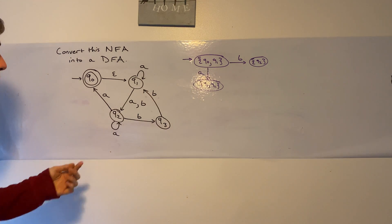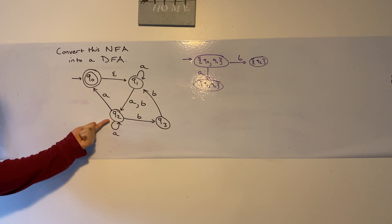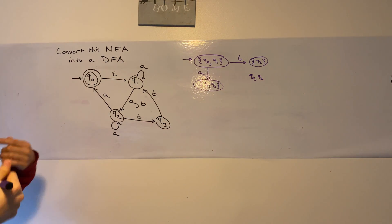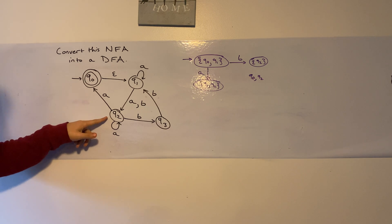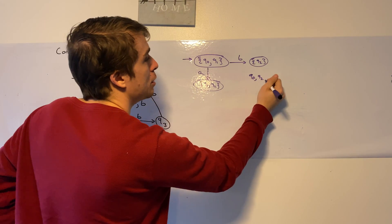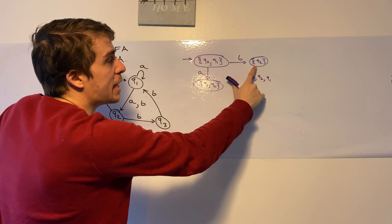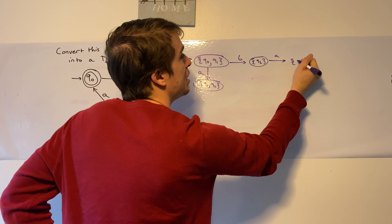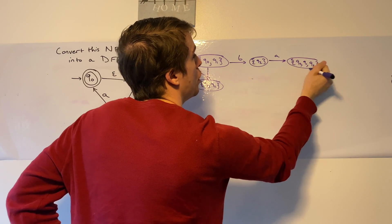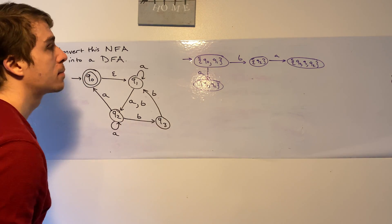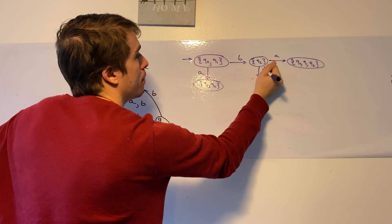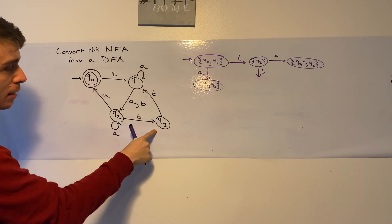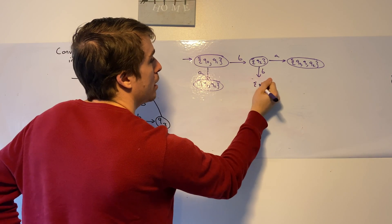Let's look at the Q2 state. On input A, we can go to itself or Q0. So the set of states to track is {Q0, Q2}. But we have to compute the epsilon closure: Q2 doesn't go anywhere on epsilon, but Q0 does — it includes Q1. So the set of states from Q2 reading A is {Q0, Q1, Q2}. That's a new state, so we make it. On input B from Q2, the only place we can go is Q3, and the epsilon closure of Q3 is itself since it has no epsilon transitions. So we make a Q3 state.